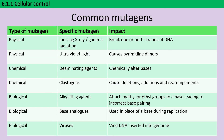Mutagens can be split into physical, chemical, and biological types. For instance, X-rays and gamma rays can both introduce strand breaks in the DNA, and during the repair process mutations may be introduced. UV light can cause adjacent thymine or cytosine bases to bond together to form a dimer, and this leads to errors during replication.